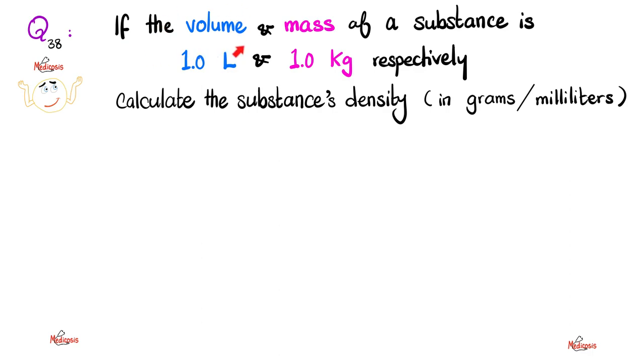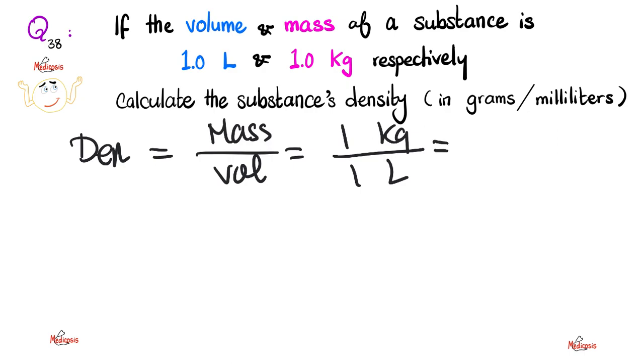Here is another question. If the volume and the mass of a substance is 1 liter and 1 kilogram respectively, please calculate the density of that substance in grams per mls. Please pause and try to do this yourself. Let's go. So let's get the density first. You know that density equals mass over volume. And what's the mass that I have here? 1 kilogram over 1 liter. Which makes the density 1 kilogram per liter. Do I need the answer in 1 kilogram per liter? Oh, heck no. I want grams per ml.